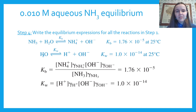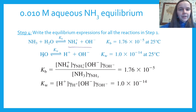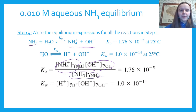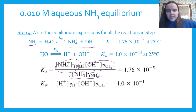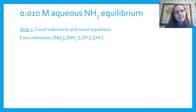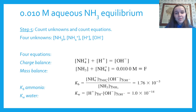Step 4 — write equilibrium expressions including activity coefficients. The Kb expression is: Kb = [NH₄⁺]γ(NH₄⁺) × [OH⁻]γ(OH⁻) / ([NH₃]γ(NH₃)). The Kw expression is: Kw = [H⁺]γ(H⁺) × [OH⁻]γ(OH⁻). Remember this is the only step in the six-step process where activity coefficients appear.